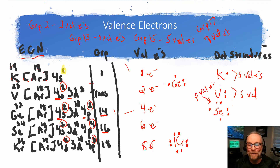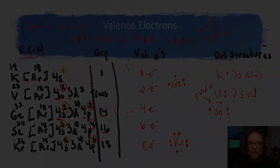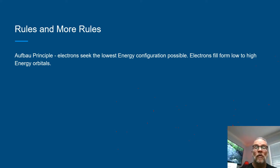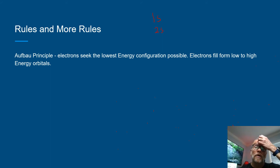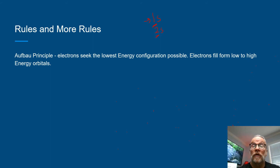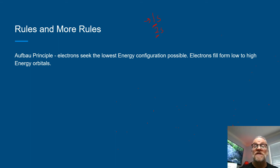This concludes our discussion of valence electrons. In the next slides, we'll talk about rules for filling electrons from low to high energy orbitals. For example, the 1s fills before the 2s, and so on. On your quantum number chart, the principal quantum number tells you about the energy of the electron — the lower the principal quantum number, the lower the energy level. When we fill electrons, we fill from the lowest energy levels to the highest, because electrons seek the lowest energy state.